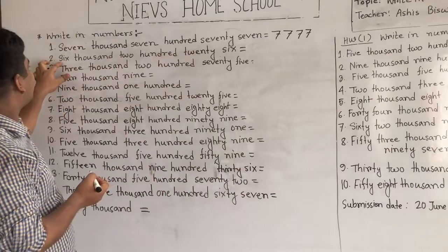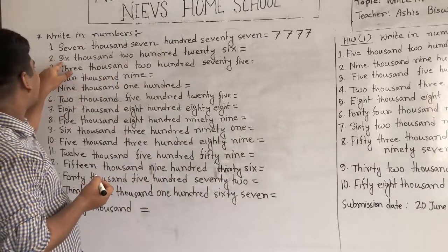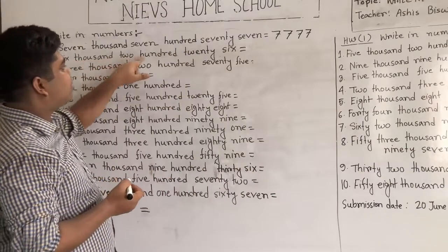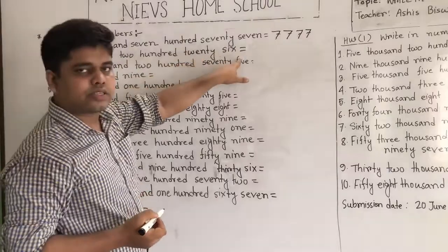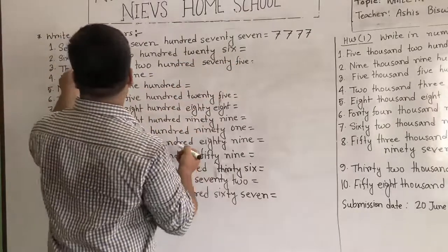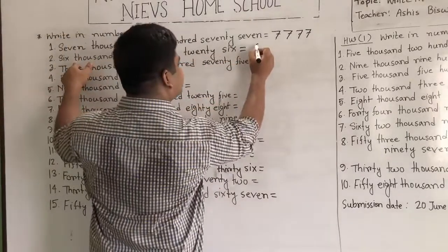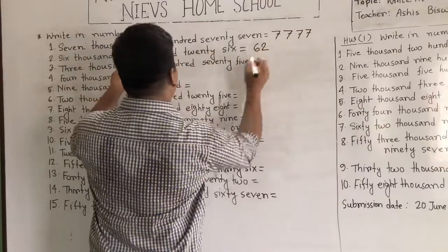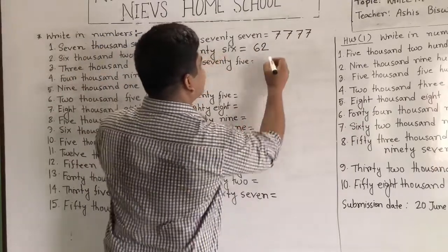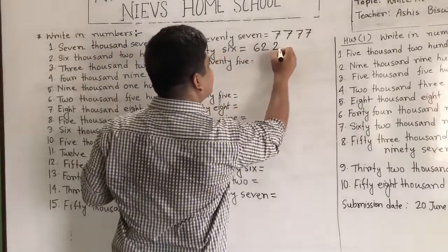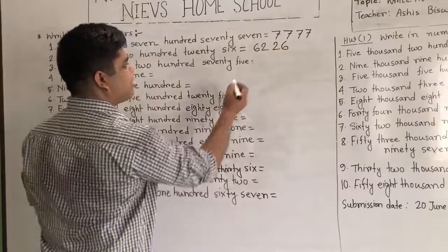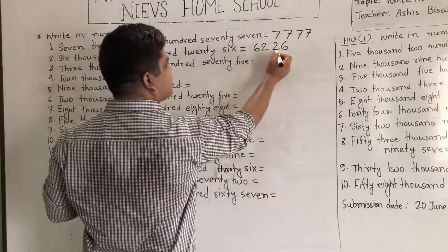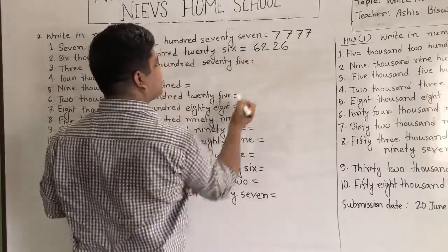Next we shall go to our second one: 6,226. So we write 6,226, and we read it as 6,226.